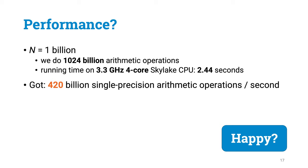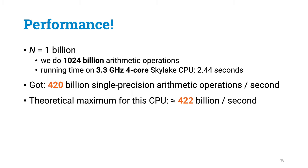Let's go check the marketing material and see what's the maximum arithmetic throughput of the CPU. If you do everything right, keep the arithmetic units busy all the time, then you can do at best 422 billion operations per second.